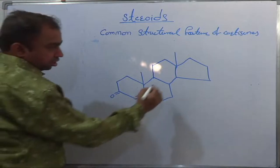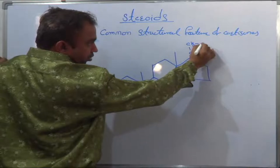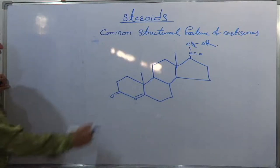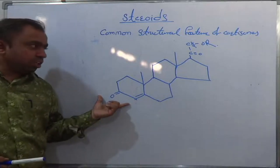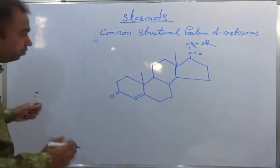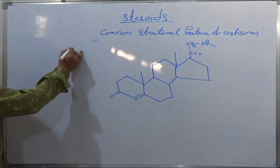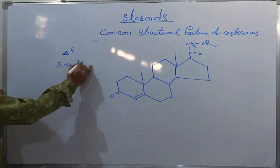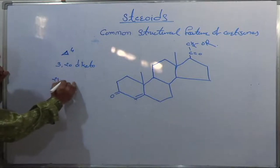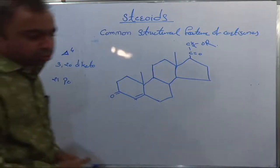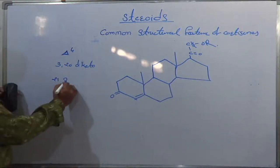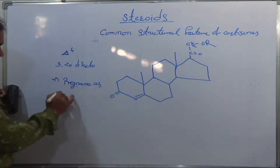There is a double bond, there is a C=O group here. This is the common structural feature of cortisone. It is having delta-4, 3,20-diketone and 21-pregnane as the basic nucleus.